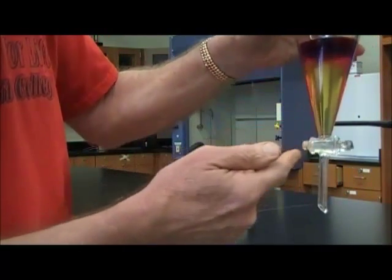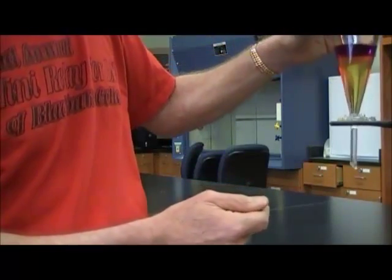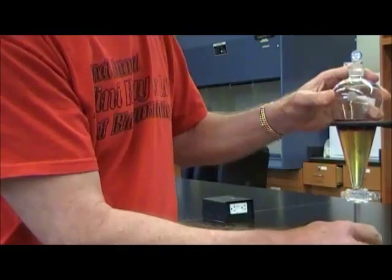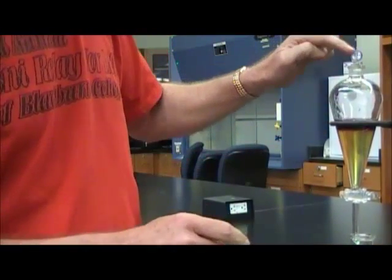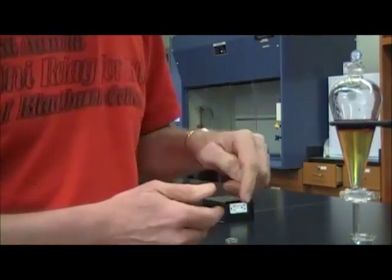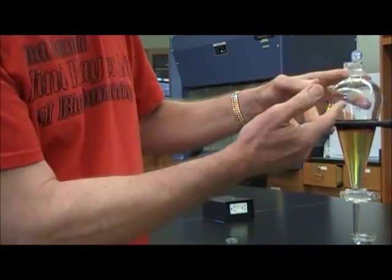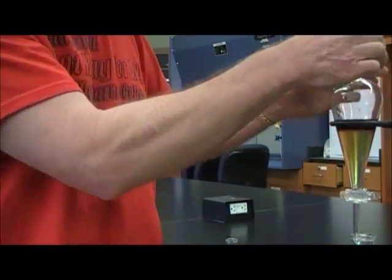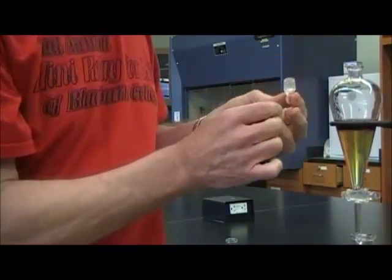I'm going to go ahead and drain out some of the bottom layer into a separate container. Now, when you do that, one thing you have to do is take the stopper out. If you try to drain it with the stopper still in there, there's no way for air to get inside, and the pressure will decrease inside as the liquid is draining out. You don't want to do that. So, just take out the stopper.